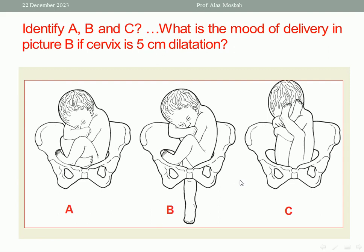Please look at this picture and identify A, B, and C. A is complete breech presentation. B is footling presentation — as you see, the foot is sent down. C is frank breech presentation. Next part: what is the mode of delivery in picture B if the cervix is 5 cm? Picture B, as we said, is footling presentation with the cervix at 5 cm — you should do cesarean section for such a case.